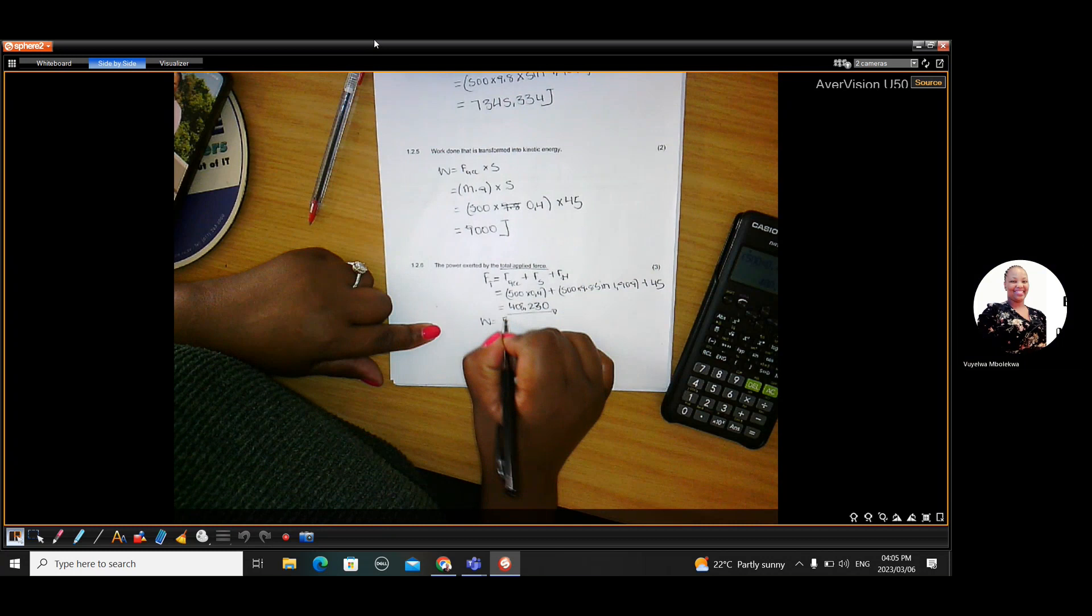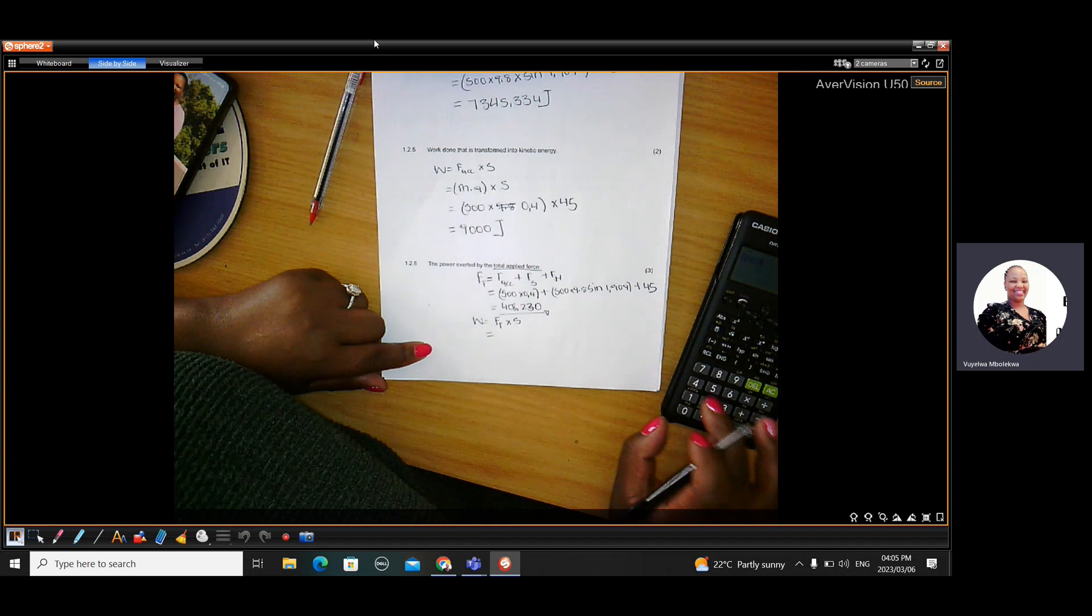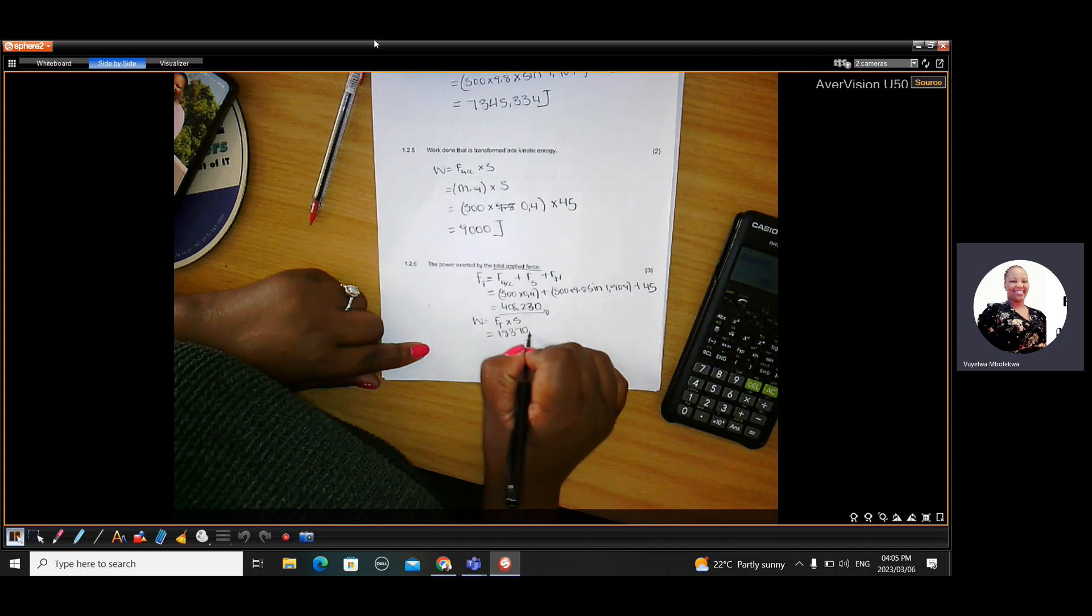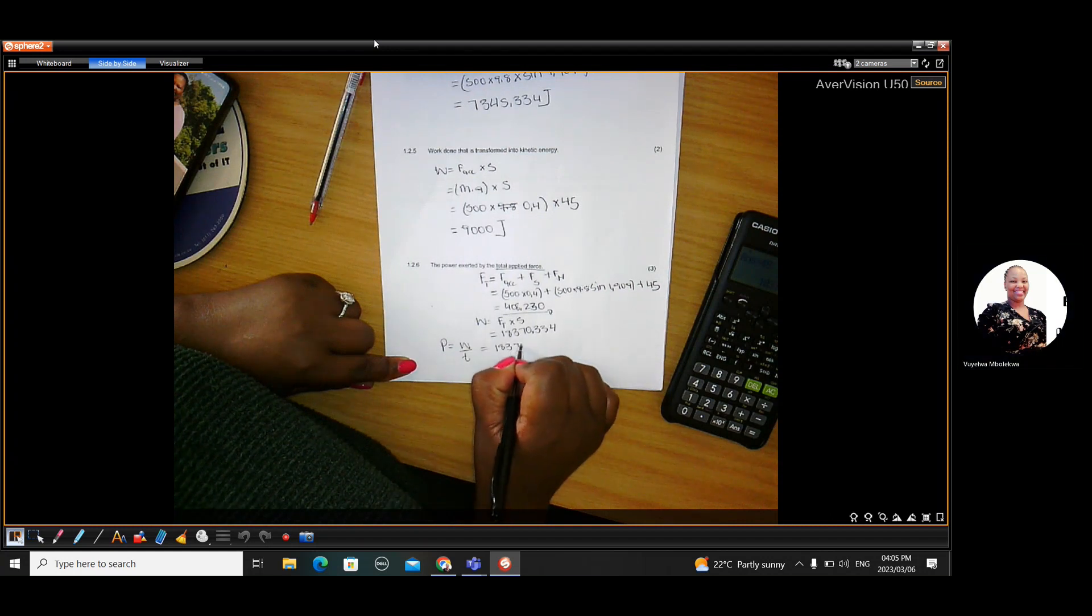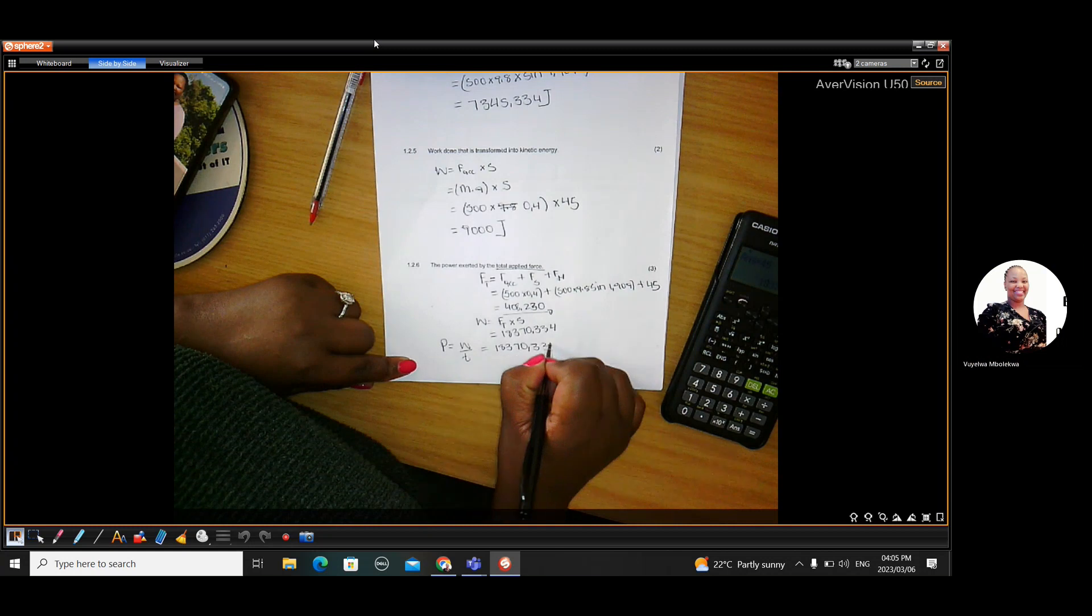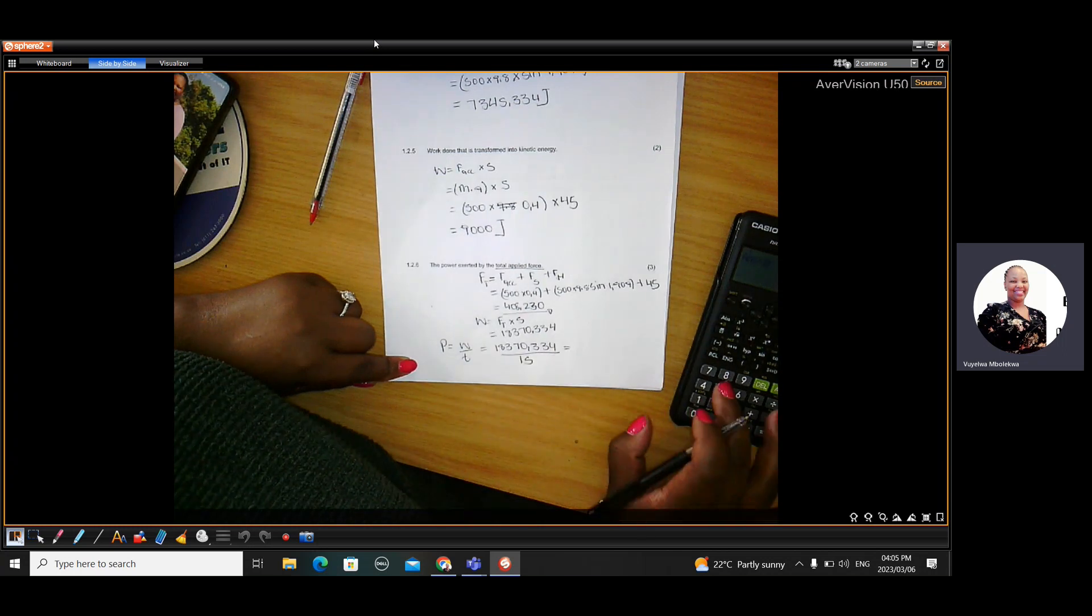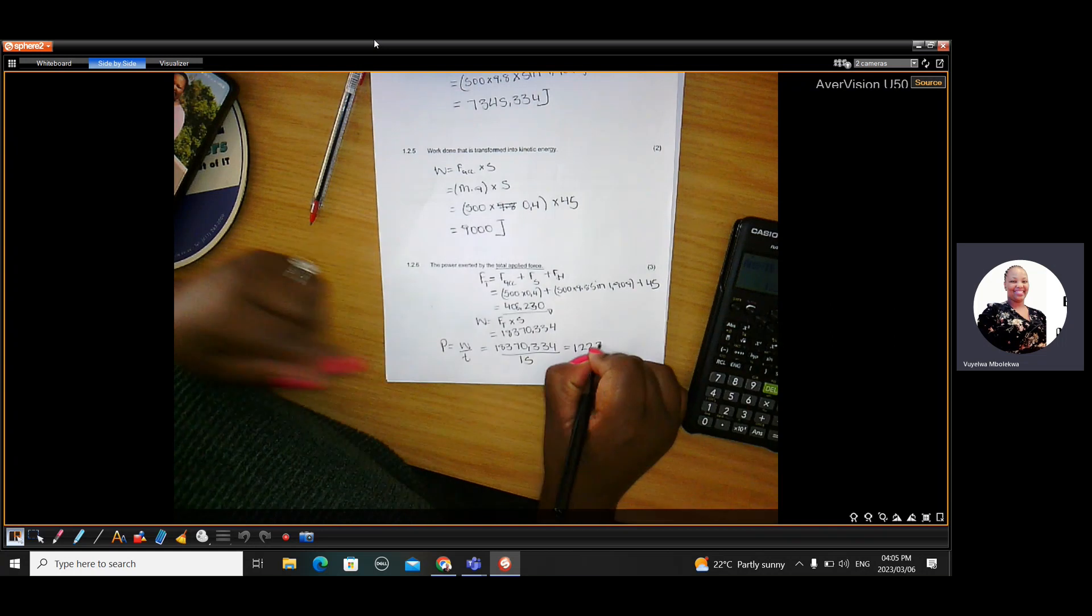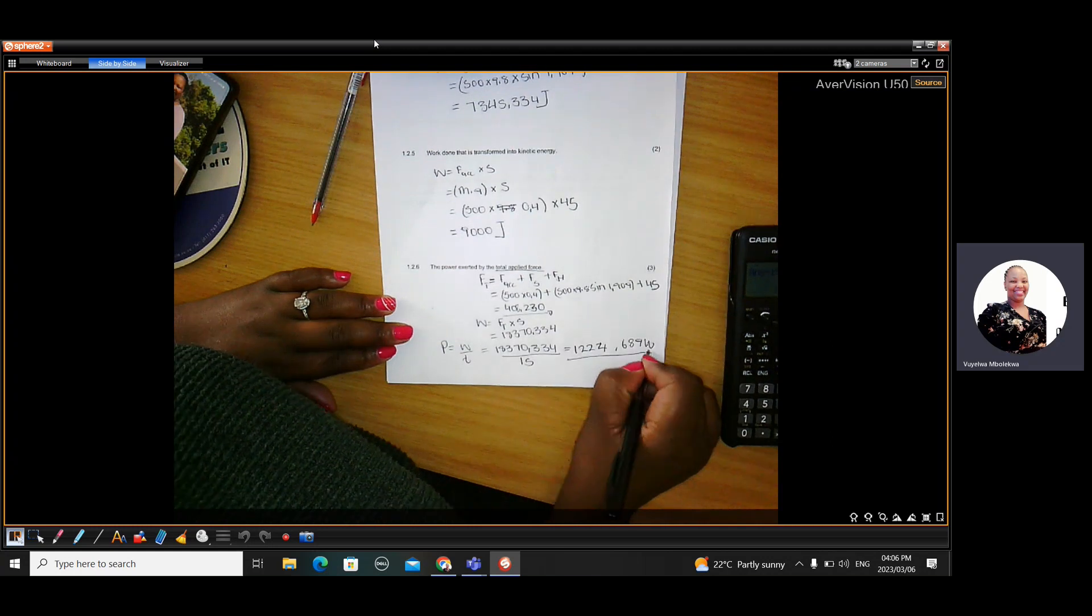Then work done is force times distance. So it's total force in this case. So this force times by 45, it gives me 18,370.334. Then power is work done over time, which is this work done divide by the time of 15 seconds. It took 15 seconds. So this divide by 15 gives me 1,224.689 watts. That is power in watts.